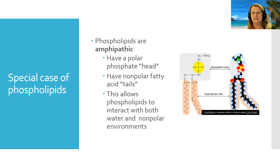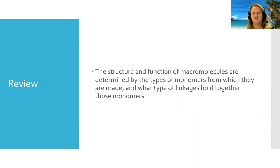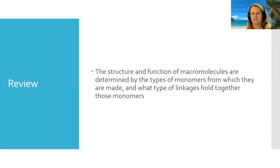The more unsaturated lipids there are in the phospholipids, the more flexible the cell membrane will be; the more saturated lipids, the more rigid. To review: the structure and function of macromolecules are determined by the building blocks they're made of — amino acids, nucleotides, sugars, or saturated/unsaturated fats — and by how those building blocks are linked together. Have a great day, and I will see you guys next time.